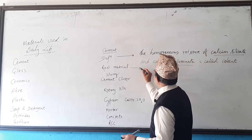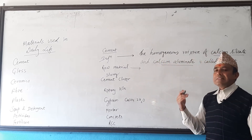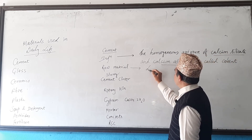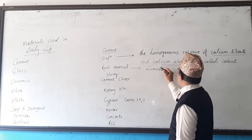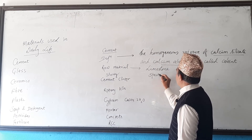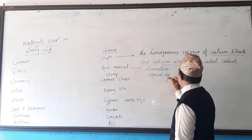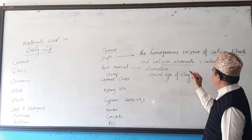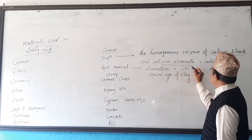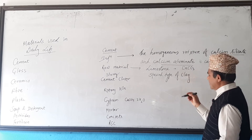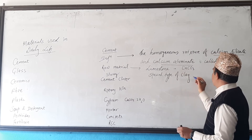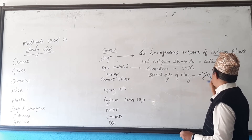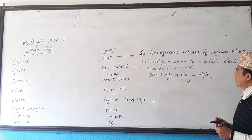What are the raw materials needed to make cement? To make cement we need limestone and a special type of clay. Limestone is CaCO₃ — calcium carbonate — and the special type of clay is Al₂SiO₃, aluminum silicate.